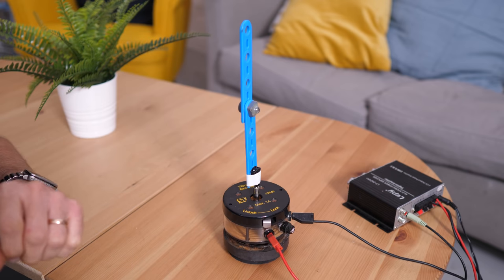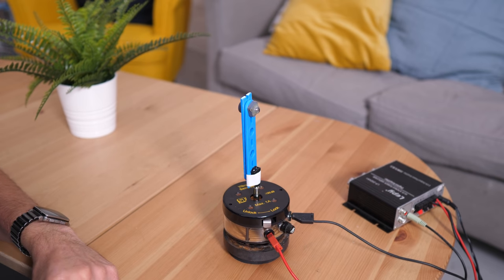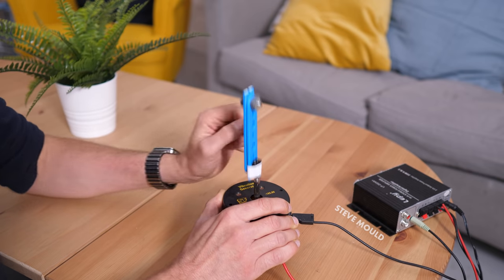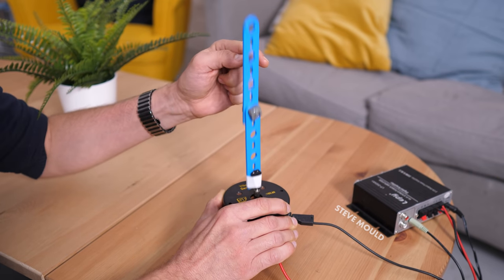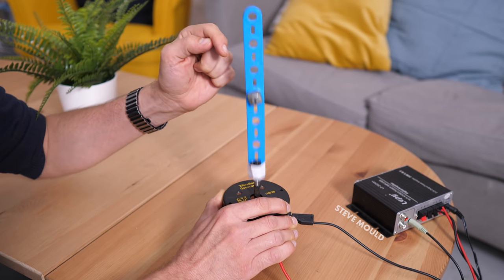So look, if I slightly perturb the rod away from its equilibrium point, it collapses. But it turns out that you can stabilize that equilibrium point by vibrating the pivot point up and down really quickly. And look, now if I try and perturb the pendulum away from its equilibrium point, it moves back. It's now a stable equilibrium.